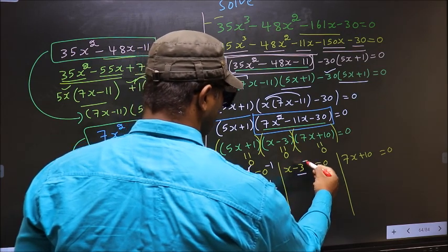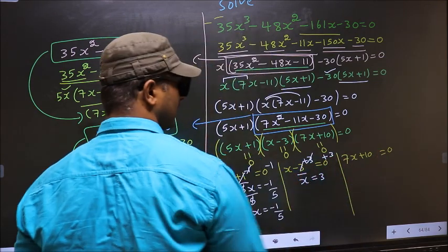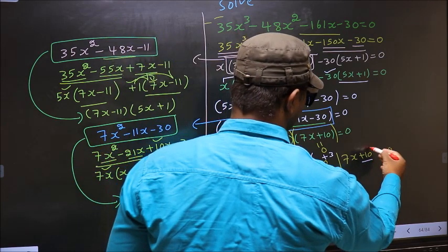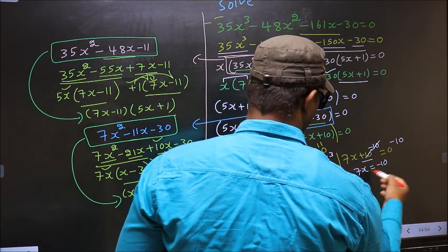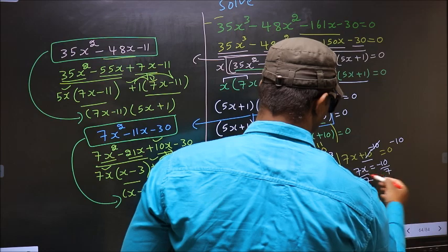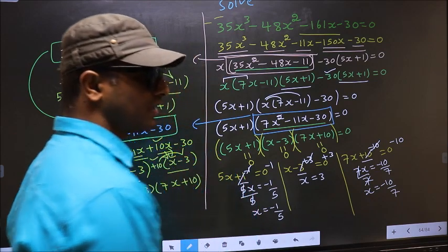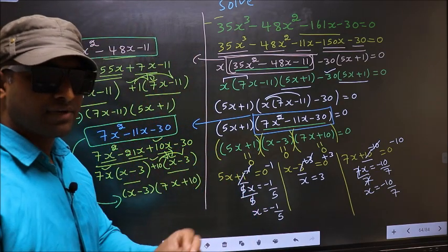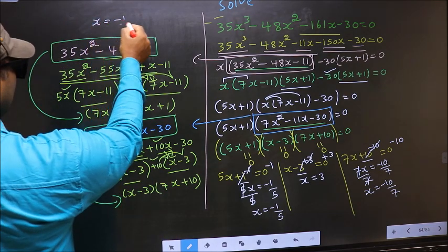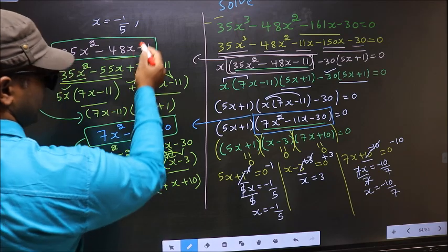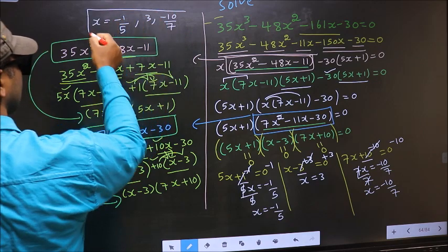From x minus 3 equal to 0: add 3 to get x equal to 3. From 7x plus 10 equal to 0: subtract 10 to get 7x equal to minus 10, then divide by 7 to get x equal to minus 10/7. So the x values we got are minus 1/5, 3, and minus 10/7. This is our answer.